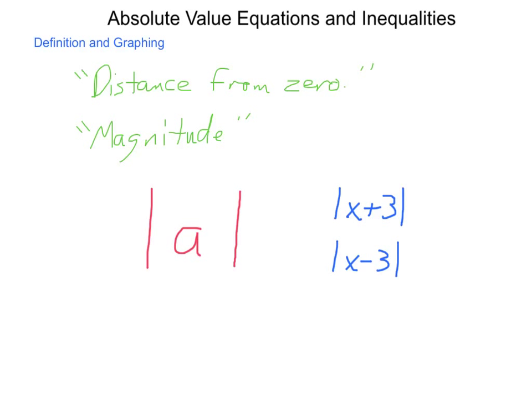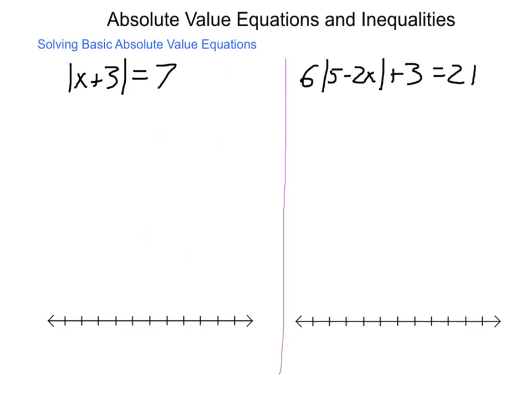The graphs, if we're solving equations, are going to be individual points. If we're solving inequalities, it will be similar to an and/or situation from our last lesson. So we're going to solve the absolute value of x plus 3 equals 7. Our first step is to isolate the absolute value symbol — since it is already by itself, that step is taken care of. What's inside that absolute value is 7 units away from 0, so what's inside has two choices: it can be either positive 7 or negative 7. We break it up into two equations: x plus 3 equals 7, or x plus 3 equals negative 7.